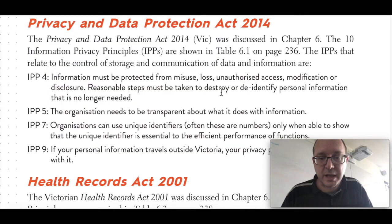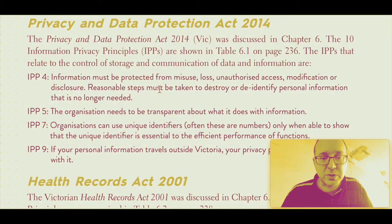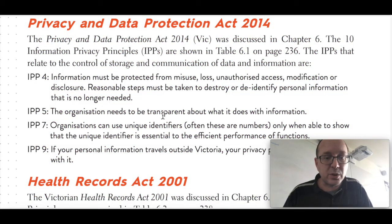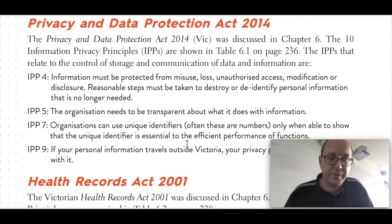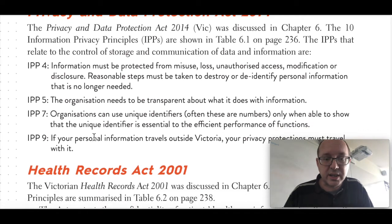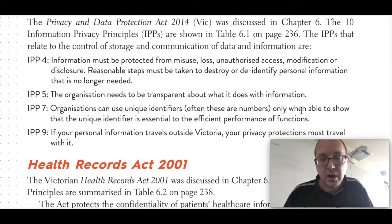Reasonable steps must be taken to destroy or de-identify personal information that is no longer needed. The organisation needs to be transparent about what it does — you've got to be honest about what you're doing with data and you have to tell people. Organisations can use unique identifiers, often numbers, only when able to show that the unique identifier is essential to the efficient performance of functions.